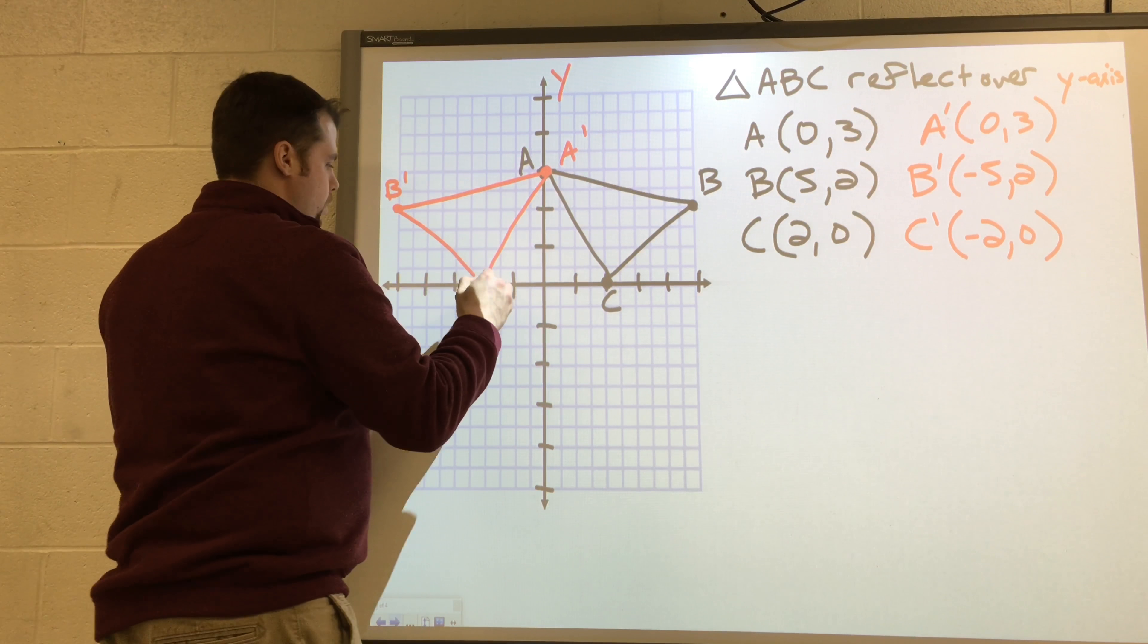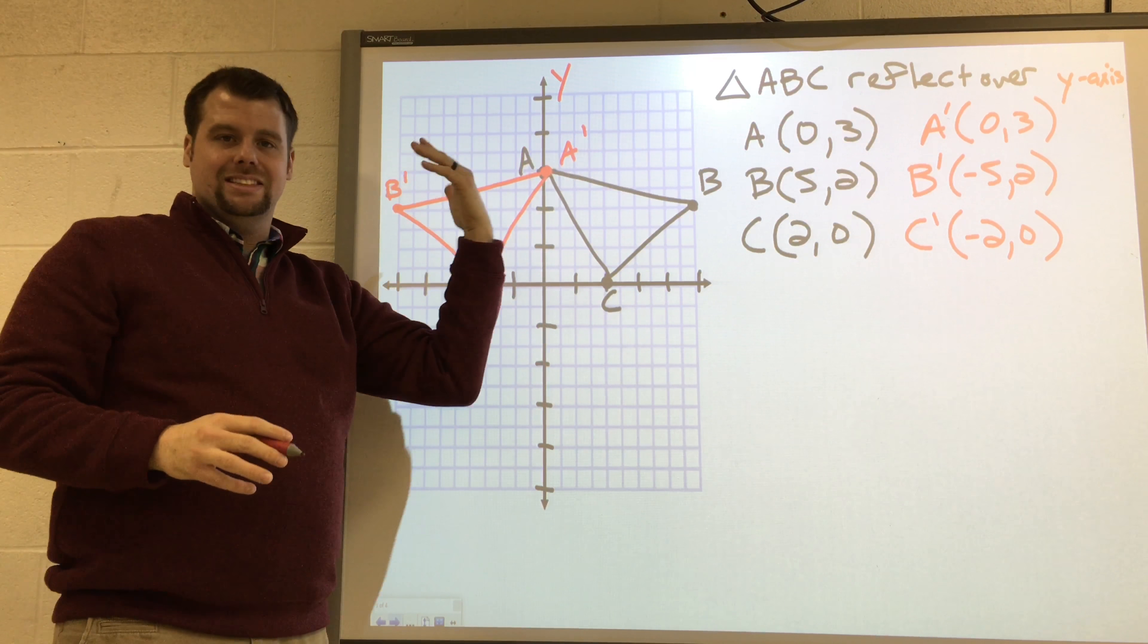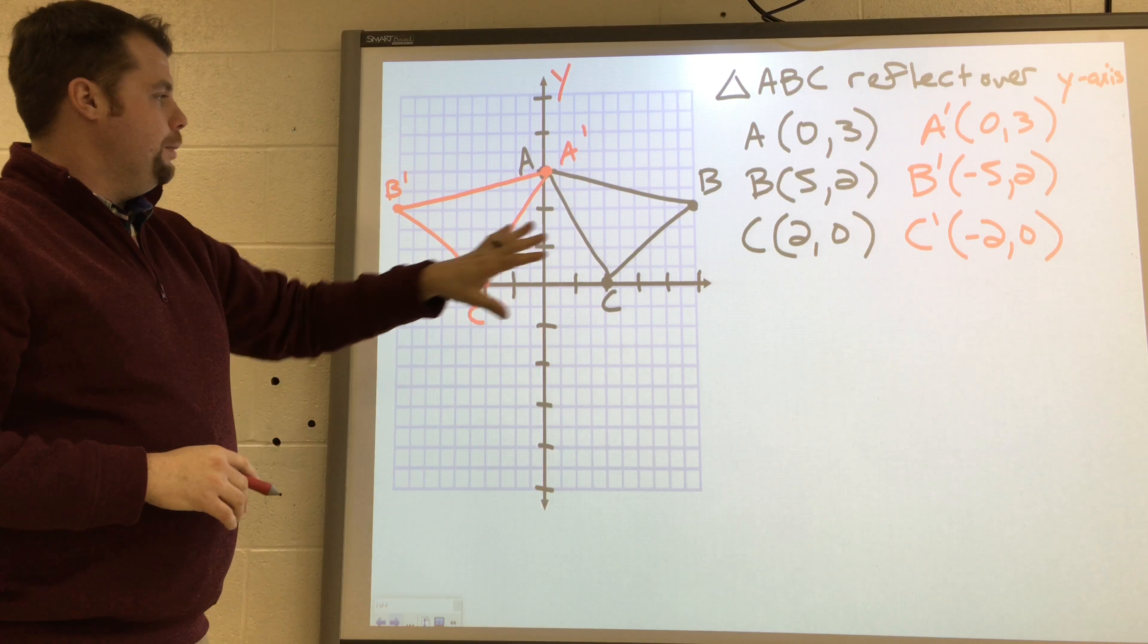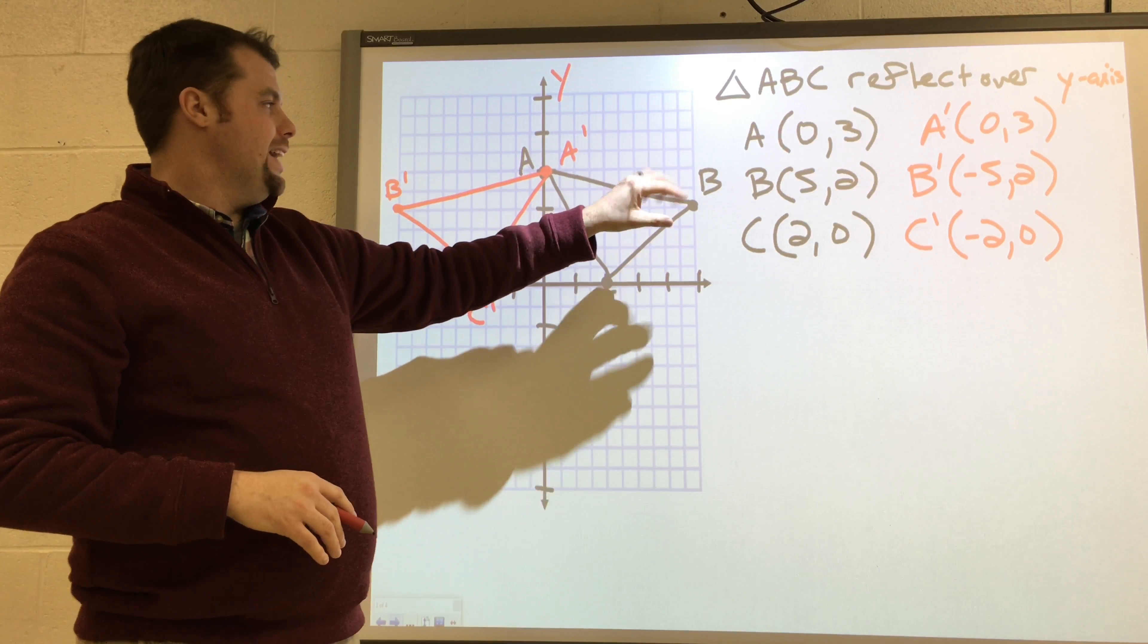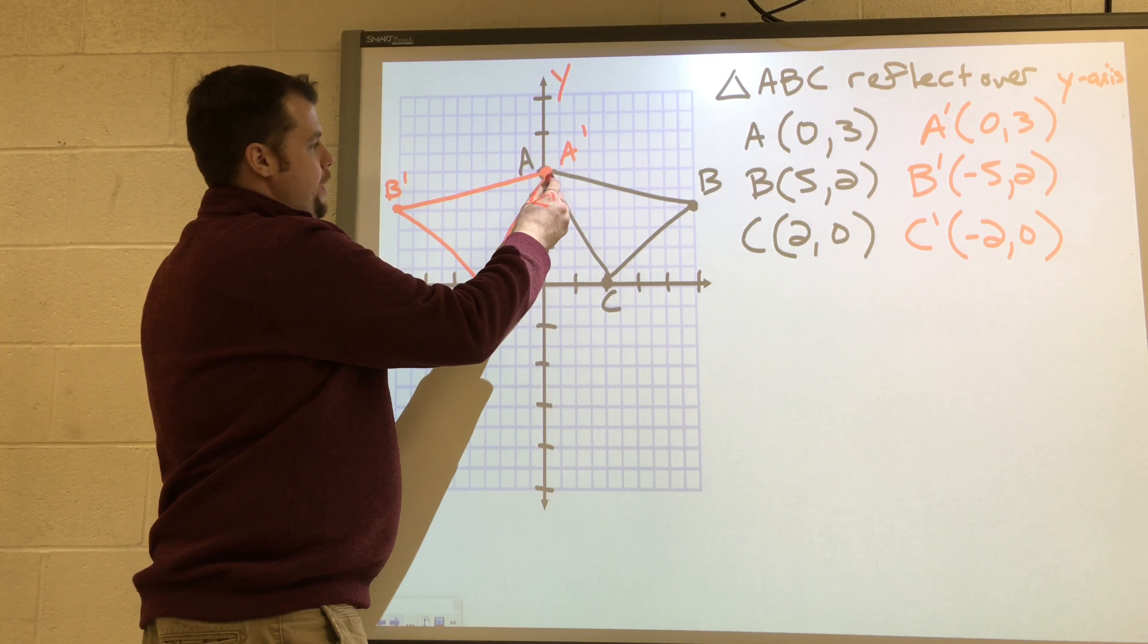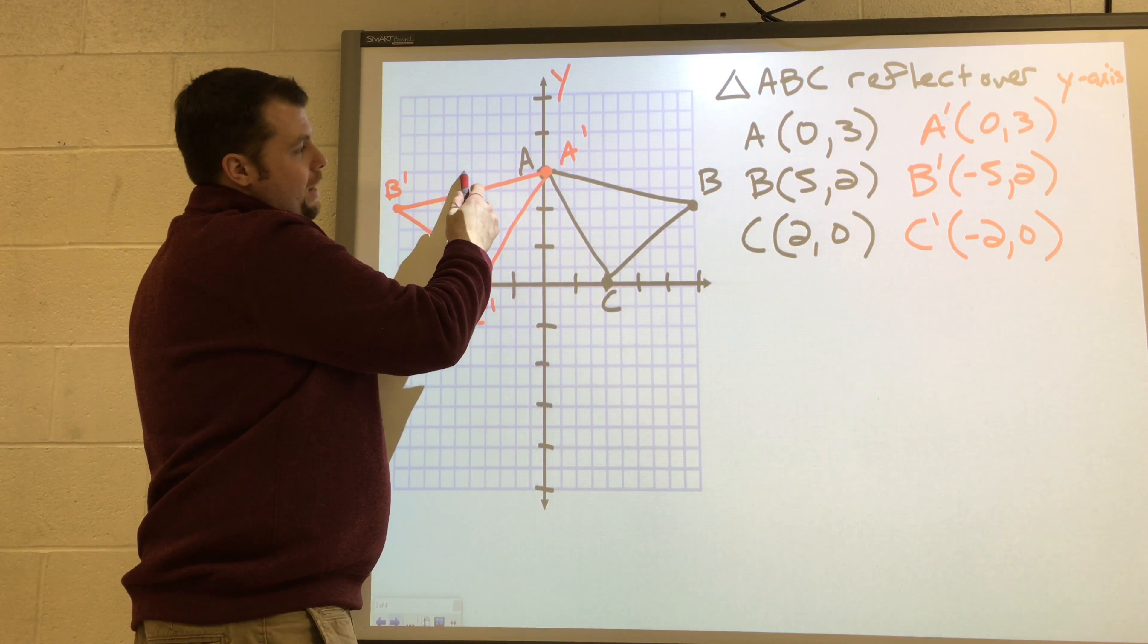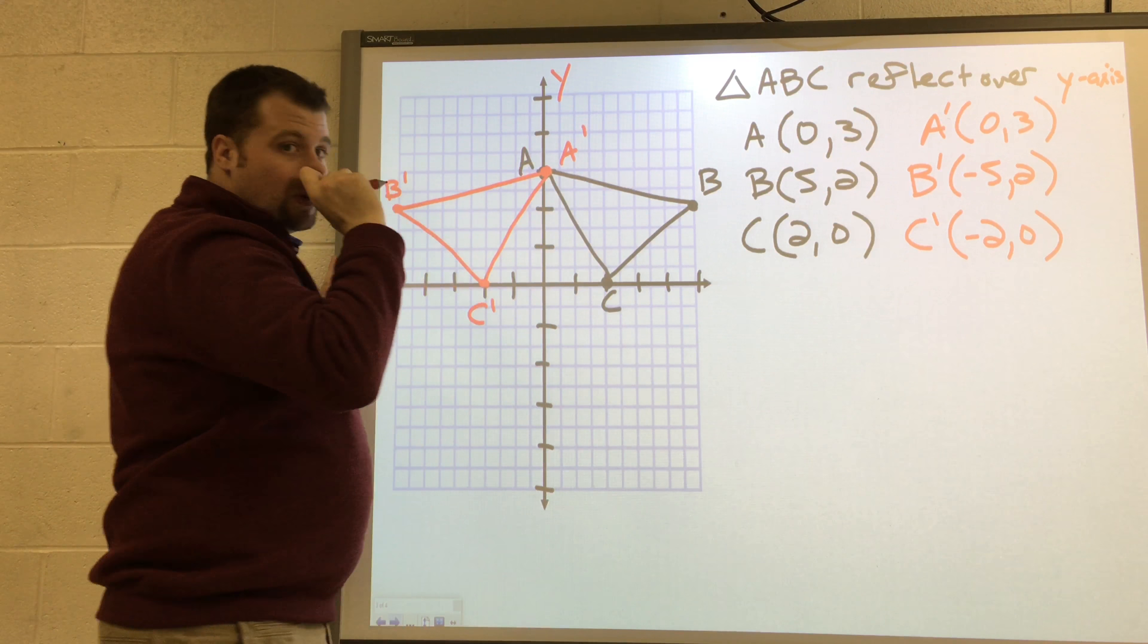So there's our reflected triangle. You can see it got flipped over the y-axis. However far it was to the right, it would move across. Now, in this case, let's say A was over here. If it was over here and I reflected it, it would then move to the right side.